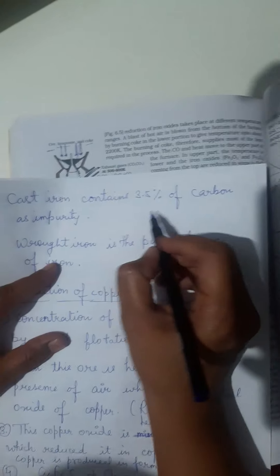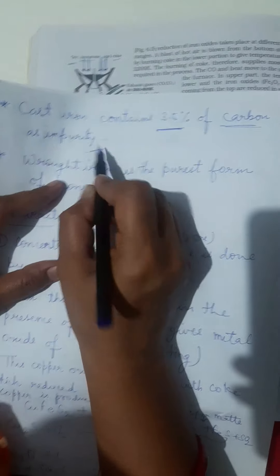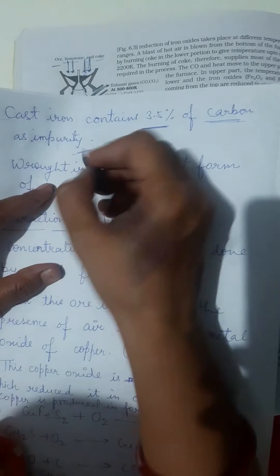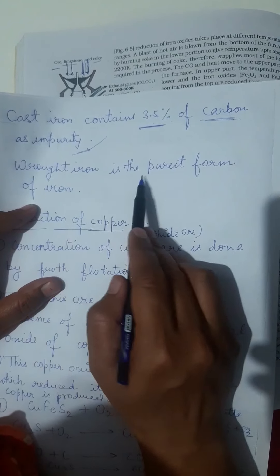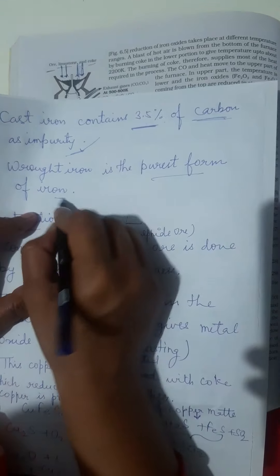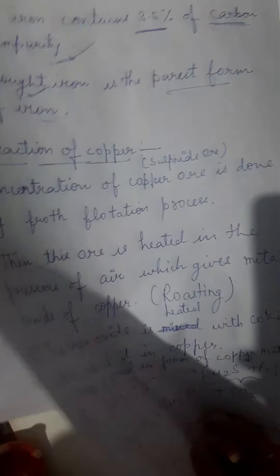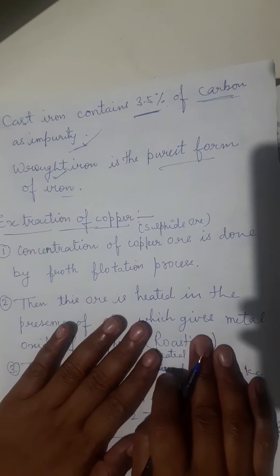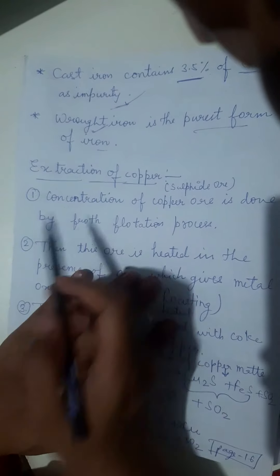Next, cast iron. Cast iron contains 3.5% of carbon as impurity. Wrought iron is the purest form of iron. Now, the second point is extraction of copper.